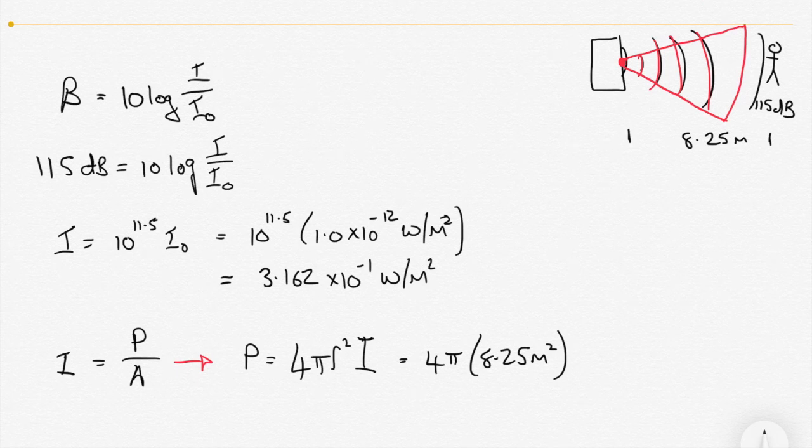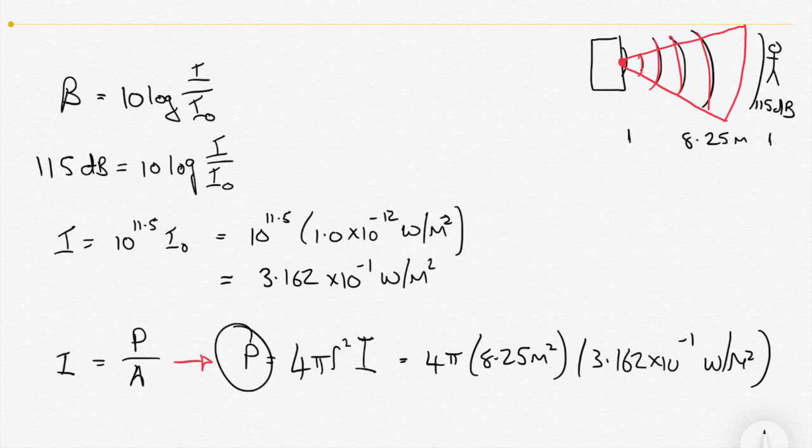And the last thing we need then is that intensity, which we measured to be 3.162 by 10 to the minus 1 watts per meter squared. So we solve that then for I. So I is what we're looking for. The, sorry, P is what we're looking for, the power. So this is what we're solving for here. And that comes out to be 270.45 watts.